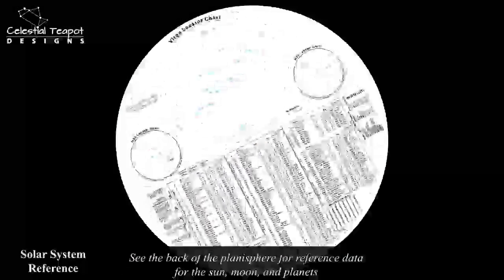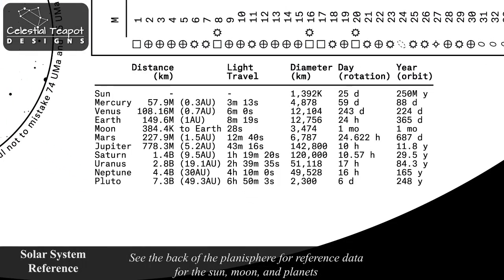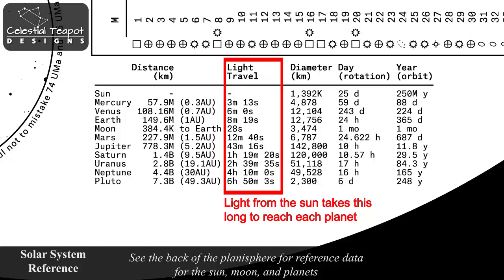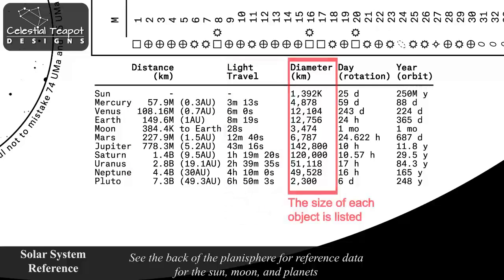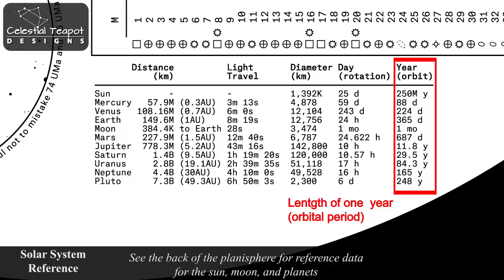See the back of the planisphere for reference data for the Sun, Moon, and planets. This information is often useful at public star parties. It shows the distance from the Sun to each object, as well as the light travel time from the Sun. The size or diameter of each object is also shown, as well as the length of each planet's day and year — the time it takes to orbit the Sun. The Sun itself takes about 250 million years to orbit the center of the galaxy.